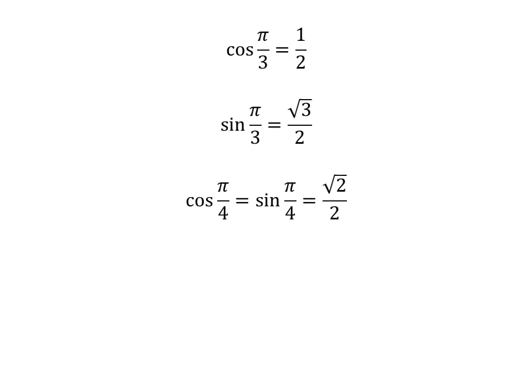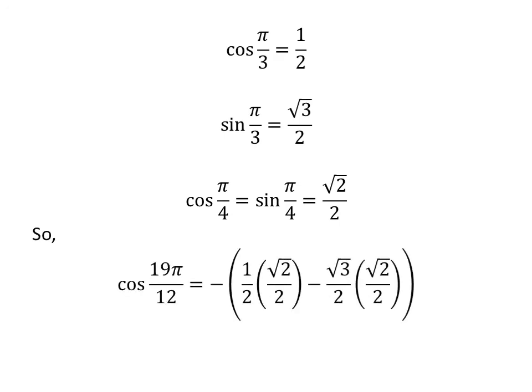As we know, cosine of pi upon 3 is equal to one half, sine of pi upon 3 is equal to square root of 3 upon 2, and cosine of pi upon 4 is equal to sine of pi upon 4 is equal to square root of 2 upon 2. So we plug in these values in the above equation and get cosine of 19π/12 is equal to minus of one half times square root of 2 upon 2, minus square root of 3 upon 2 times square root of 2 upon 2.